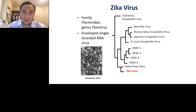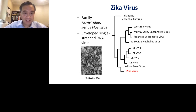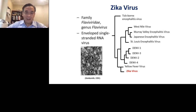Zika virus is in the family Flaviviridae, in the genus Flavivirus. Other members include West Nile virus, Japanese encephalitis virus, St. Louis encephalitis virus, dengue virus, and yellow fever virus. These are all enveloped, single-stranded RNA viruses. Many have been associated with human disease, and they infect a wide variety of animals, including vertebrates such as humans as well as invertebrates such as mosquitoes.